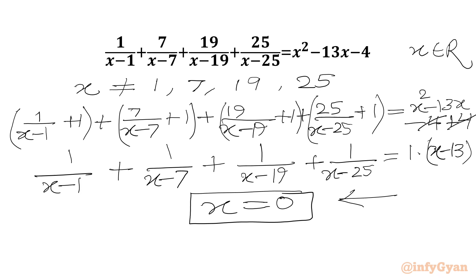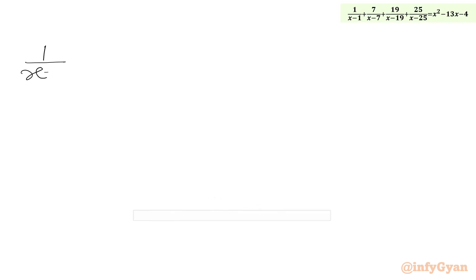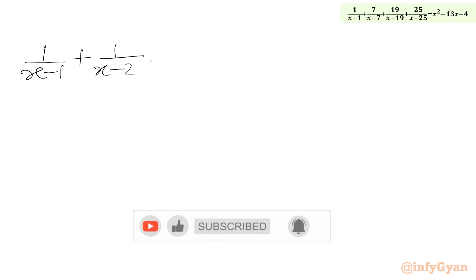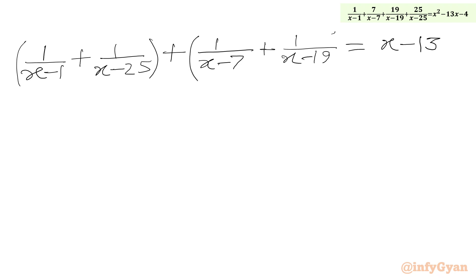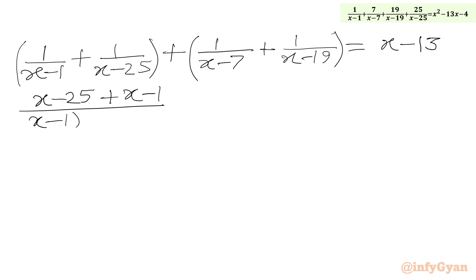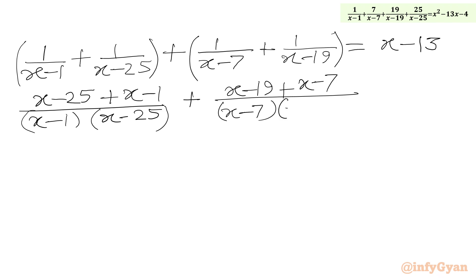Now we will club the first and fourth terms of the LHS together, and the second and third terms together. We write: 1 over (x minus 1) plus 1 over (x minus 25), plus 1 over (x minus 7) plus 1 over (x minus 19), equal to x minus 13. Taking LCM, the numerator gives 2x minus 26, which factors as 2 times (x minus 13).